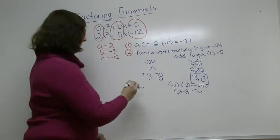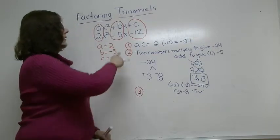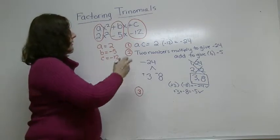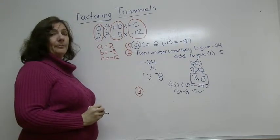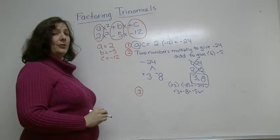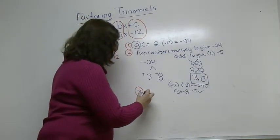Now step 3, you can kind of think of step 3 as undoing step 1. In step 1, we multiply by that A term. Like I said, something we don't normally do when we do basic simple factoring. So we're going to undo it by dividing by A.